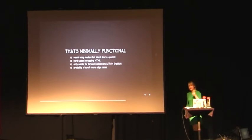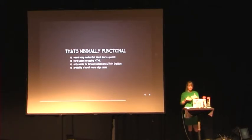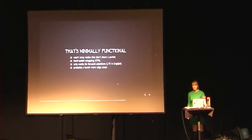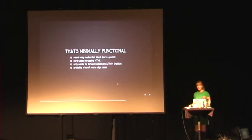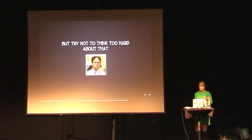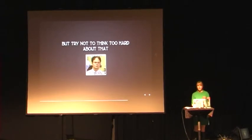That code is minimally functional — not production ready. It won't wrap nodes that don't share a parent. The HTML is hard-coded, though that's pretty easy to fix. And it only works in forward selections because we're looping through contents in order, expecting to insert start and end nodes left to right. People don't always select left to right — sometimes they go right to left, and that would break the code. There's probably more wrong with it, but those are the three things to fix first. The important thing is to understand the technique — you'd need this to work with content editable areas and provide consistent alternatives to exec command.